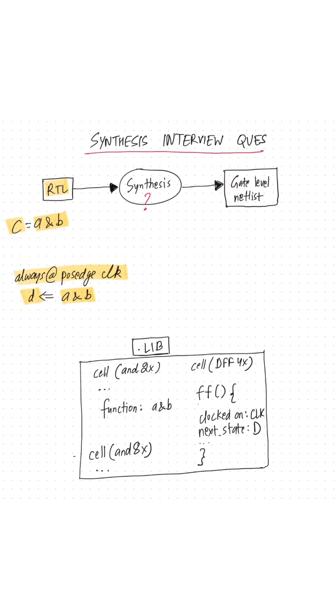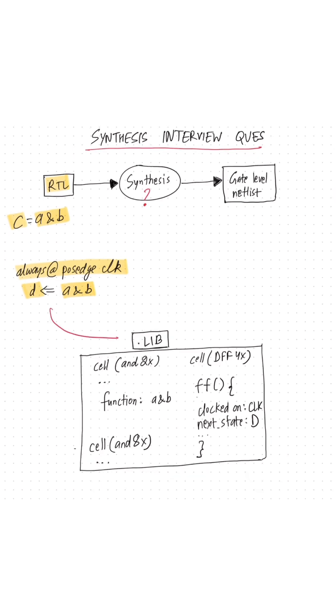So the question is, how does the synthesis tool know which cells in the dotlib should be used to map this description in the RTL?